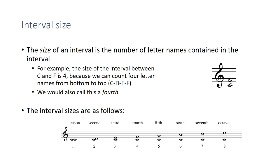Here are all the possible interval sizes from unison to octave: unison, second, third, fourth, fifth, sixth, seventh — and next would be eighth, right? No, it's the octave.